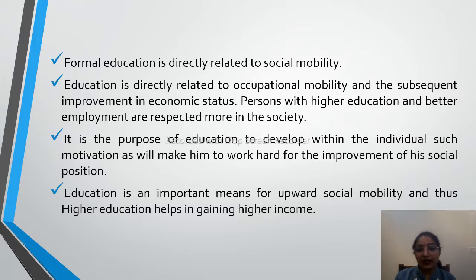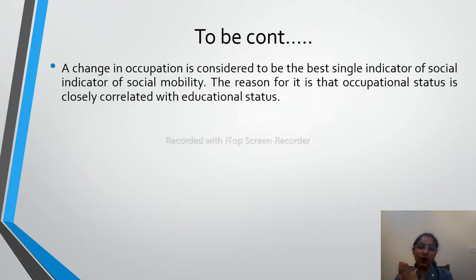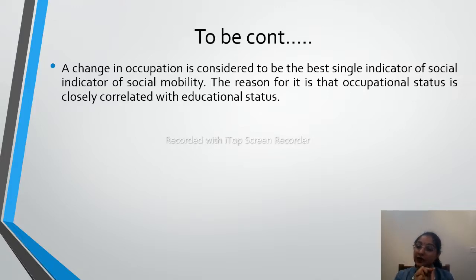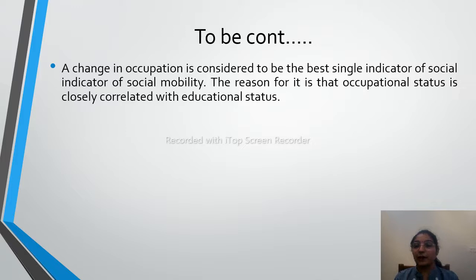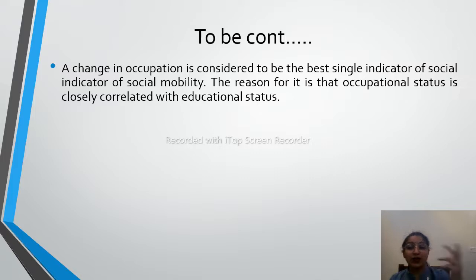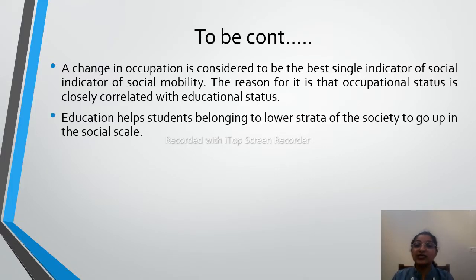Higher education helps in gaining higher income. When a person changes occupations, there are two reasons: first, they had a problem in their job; second, they have a better opportunity with higher income and a higher post. Occupation status is closely correlated with education status. For example, a person who just graduated versus someone who has an MBA — after doing MBA, they apply for higher posts and get paid more because of the qualification. So education increases your occupational status.